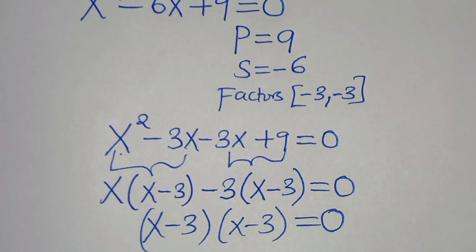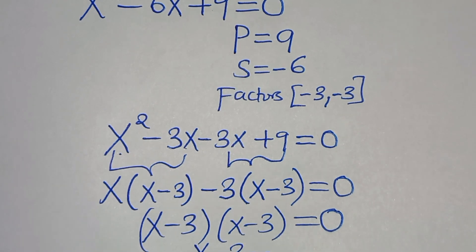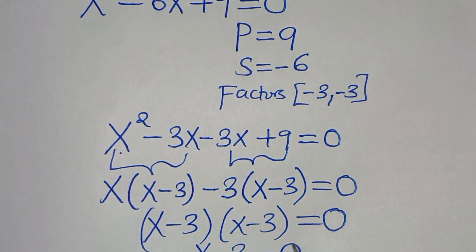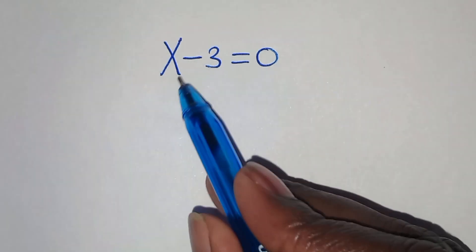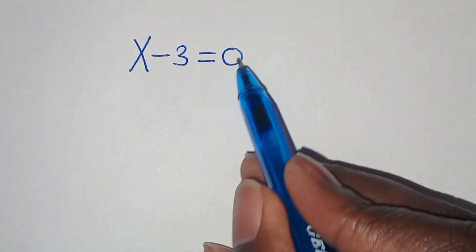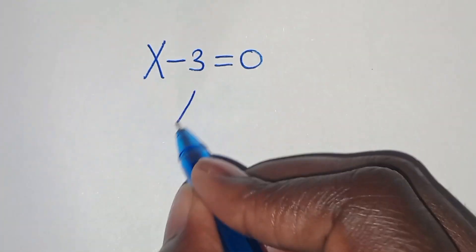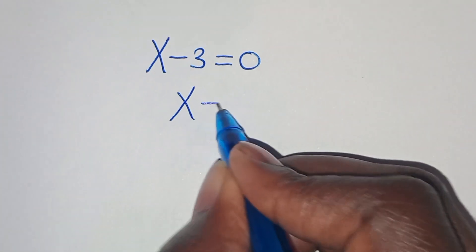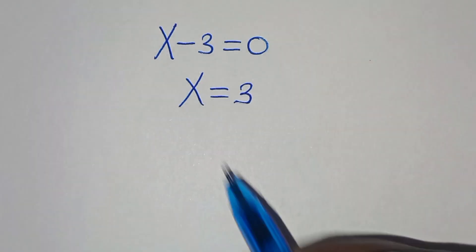In this case, x minus 3 equals 0, and x minus 3 equals 0. This means x is equal to 3.